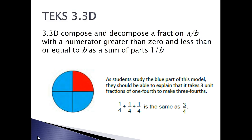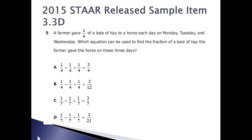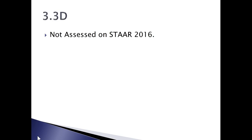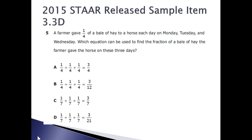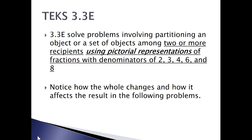Then 3.3D, we have compose and decompose a fraction a over b with a numerator greater than zero and less than or equal to b as a sum of parts one over b. So, here it shows us where one-fourth plus one-fourth plus one-fourth is the same as three-fourths. We're decomposing three-fourths into the unit fractions using one-fourth. This was on a STAR released item in 2015, but not assessed on STAR 2016. 3.3E, we're going to solve problems involving partitioning an object or a set of objects among two or more recipients using pictorial representations of fractions with denominators two, three, four, six, and eight. Now, here we're going to notice how the whole changes and how it affects the results of the following problems.